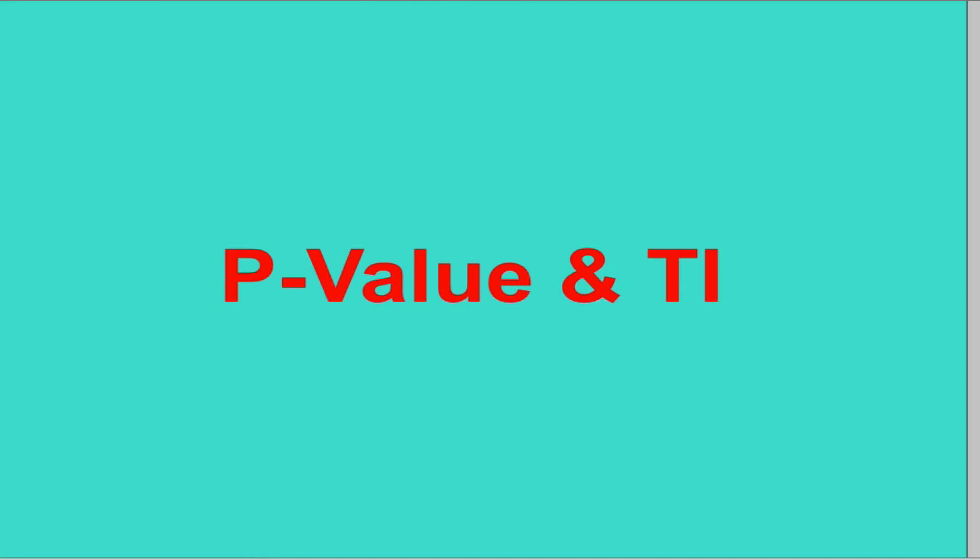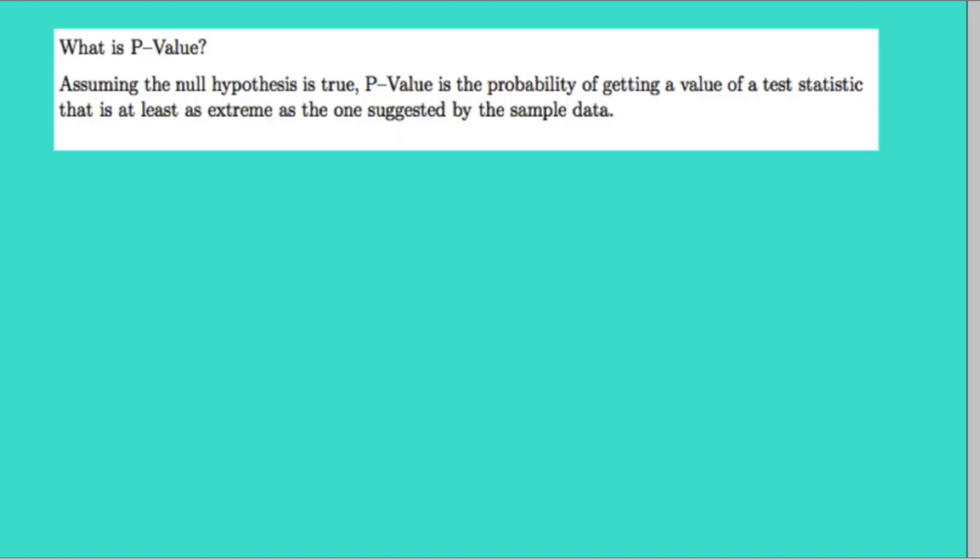In this presentation we're going to talk about p-value, how to use the p-value, and how to use the TI calculator to find a corresponding p-value when the computed test statistic is given. The formal definition of a p-value is: assuming the null hypothesis is true, p-value is the probability of getting a value of a test statistic that is at least as extreme as the one suggested by the sample data.